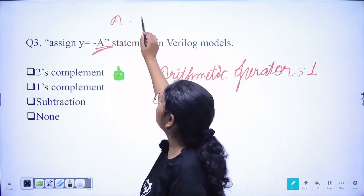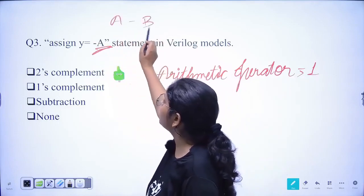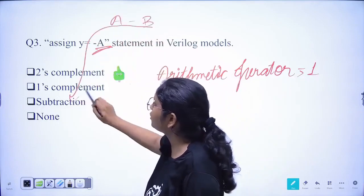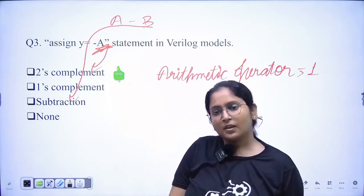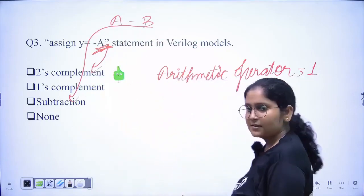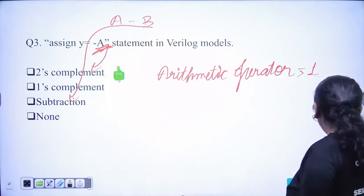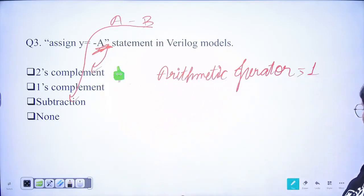Here there are two arithmetic operators and the number of operands is two, whereas in `assign y = -a` this performs the two's complement — so that is the correct interpretation.